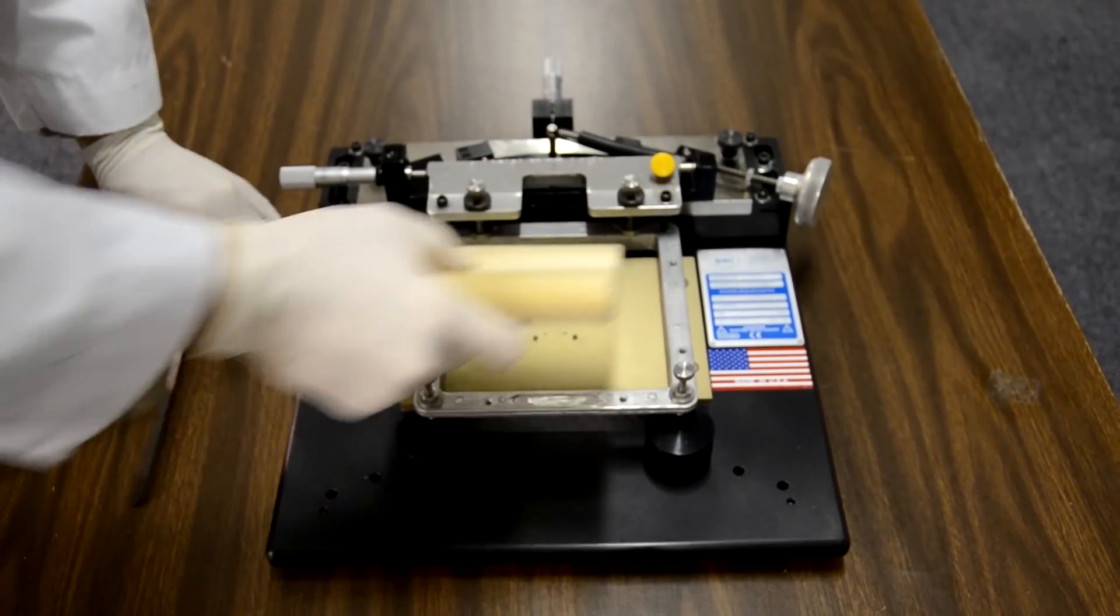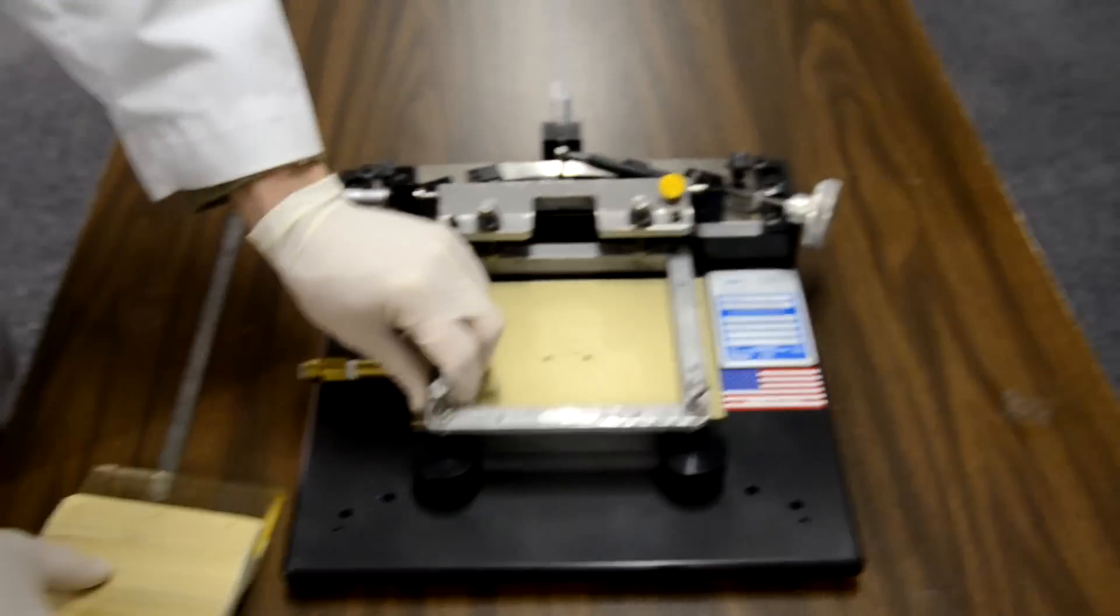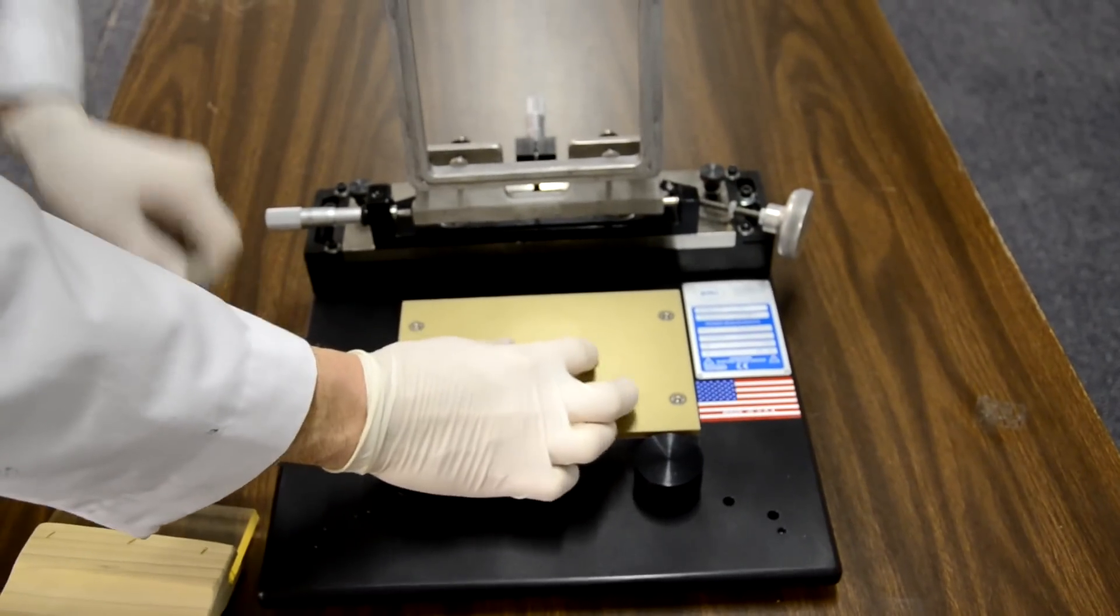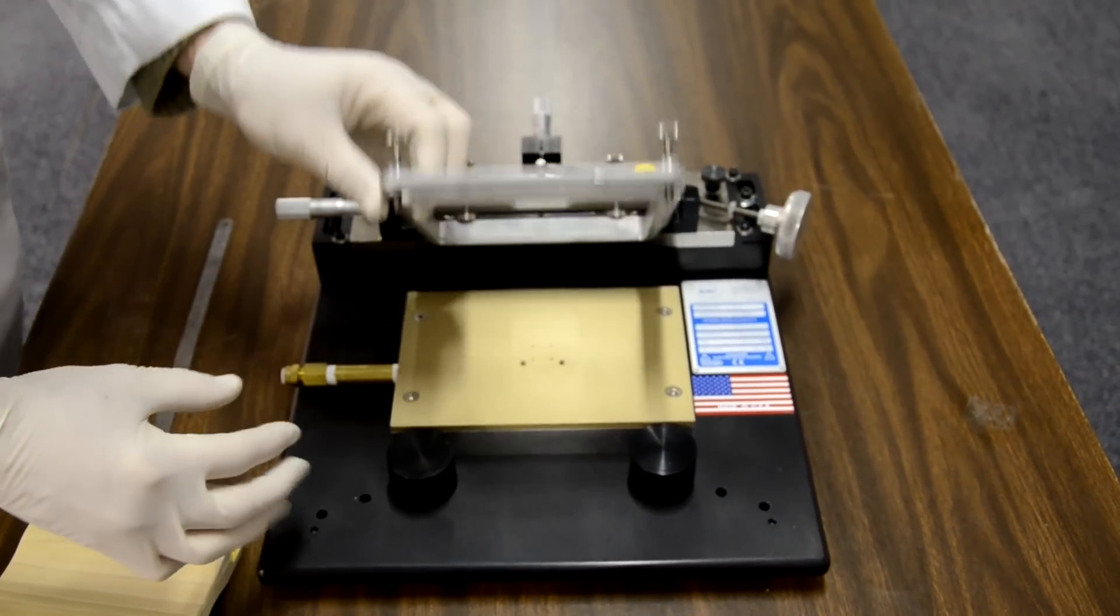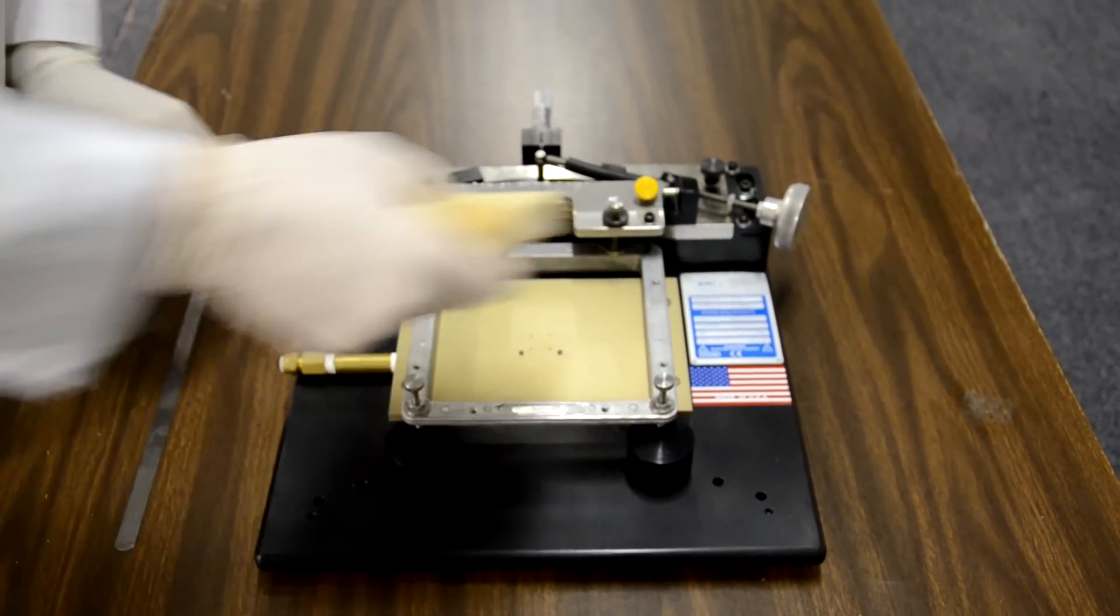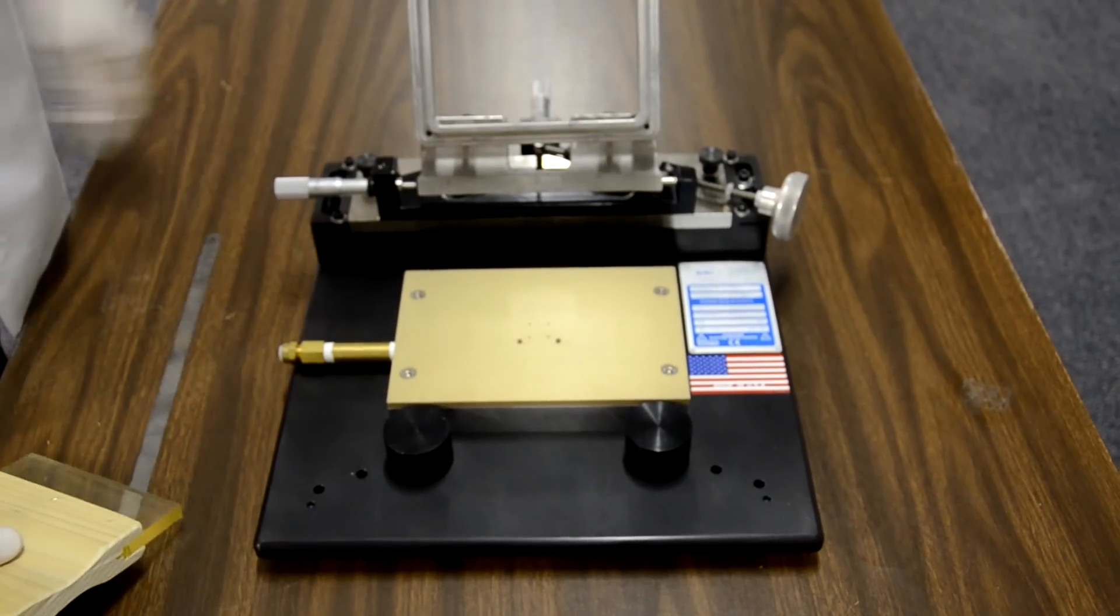I have my ink on the screen. I make my print on my substrate, pick it up, turn off the vacuum, and remove my substrate. Load a new part on the vacuum, turn it on, drop, print, and go. Thank you very much.